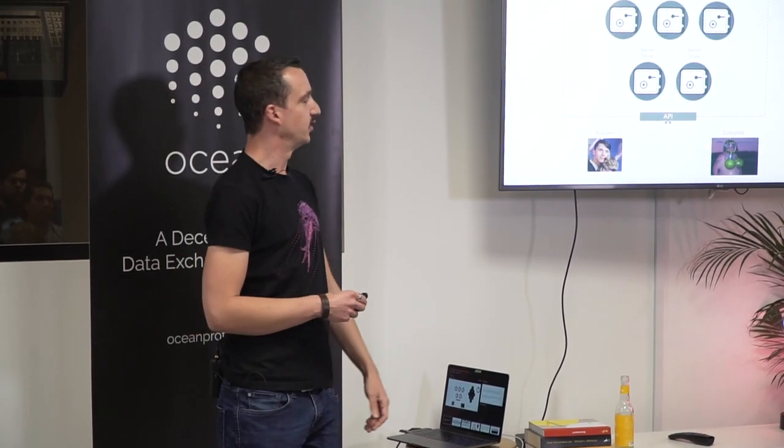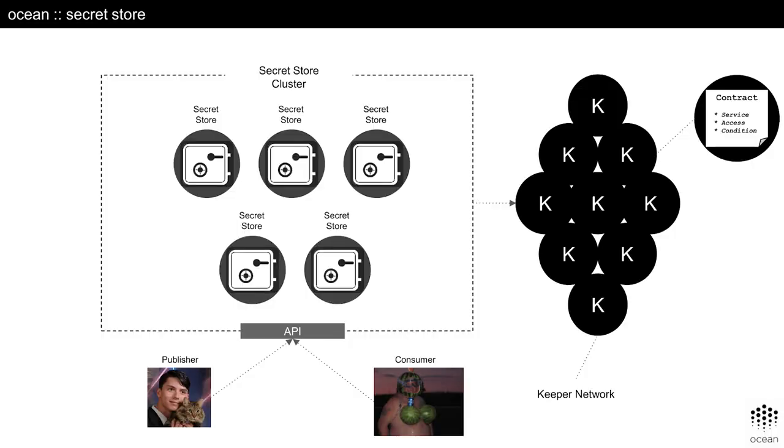This is what a secret store looks like. We have a challenge: we want to use strong encryption on data that is transferred from one party to the other, because I don't want to get my data stolen or leak data in some cases. We are using a system called secret store that is basically based on blockchain technology like a BFT — a Byzantine fault tolerance protocol.